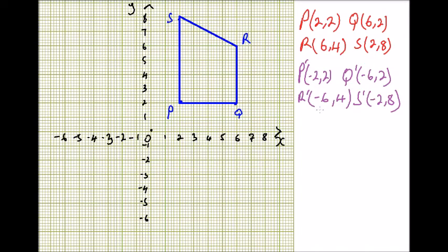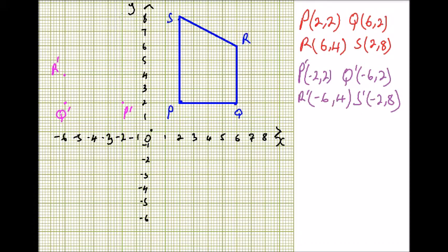Now we plot the image P'Q'R'S'. P' is at (-2, 2), Q' is at (-6, 2), R' is at (-6, 4), and S' is at (-2, 8). We join the four points to produce the image. That is our trapezium P'Q'R'S' after the given transformation matrix.